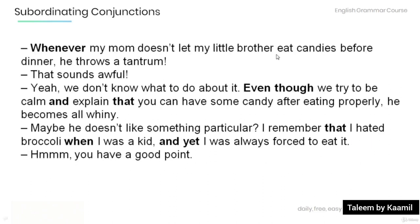Here is a short story using subordinating conjunctions. Listen as I read so you can see how they are used in real-life conversation. After I'm done, make sure you understand all the grammar and read aloud yourself, so that you can work on your own fluency and pronunciation. 'Whenever my mom doesn't let my little brother eat candies before dinner, he throws a tantrum.' 'That sounds awful.' 'Yeah, we don't know what to do about it. Even though we try to be calm and explain that you can have some candy after eating properly, he becomes all whiny.' 'Maybe he doesn't like something particular. I remember that I hated broccoli when I was a kid, and yet I was always forced to eat it.' 'Hmm, you have a good point.'